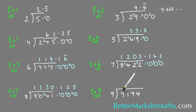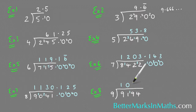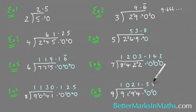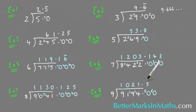Example eight: how many nines in 9194? How many nines in nine? There's one. How many nines in one? There's none, so carry that one. How many nines in 19? There's two with one left over. How many nines in 14? There's one with five left over. Put a zero and carry the five, putting the point above. How many nines in 50? Five nines are 45, so there's five with five left over. How many nines in 50 again? There's five — it looks like the five is going to repeat. So put a bar on top of that five. So how many nines in 9194? The answer is 1021.5 recurring.